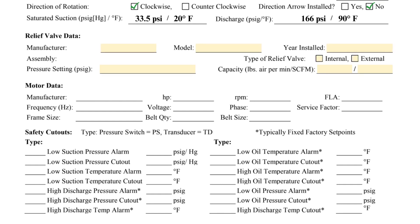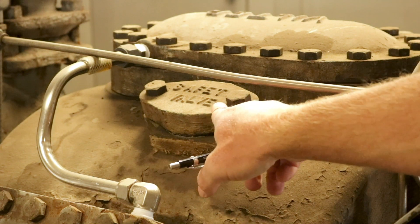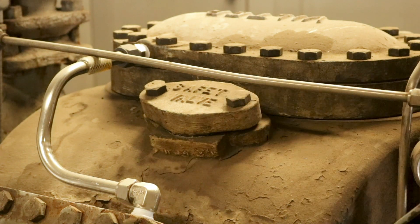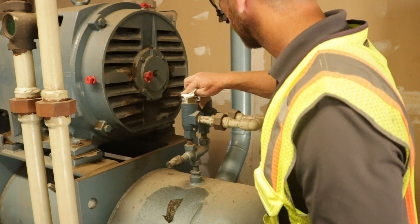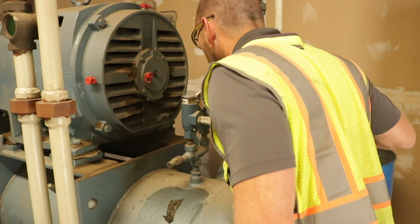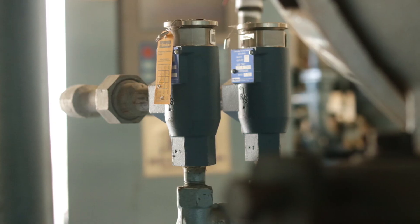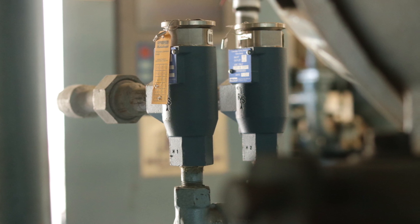The next section is named relief valve data. The reciprocating compressor is protected from overpressurization using an internal safety valve, so that should be indicated and the other fields in this section are not applicable. For the screw compressor, information such as the manufacturer, model, pressure setting, and capacity can be obtained from the relief valve nameplate.